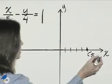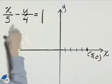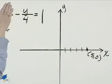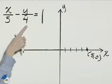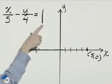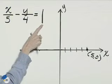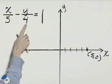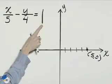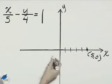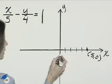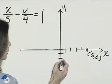For the y intercept we let x equals 0, and then we'll have negative y over 4 equals 1. Multiply both sides by negative 4 and that gives us a value of y equals negative 4.